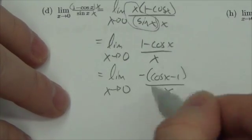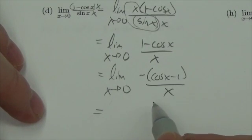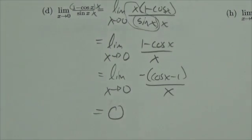We've seen this is that other identity we looked at. (cos x - 1) / x goes to 0 as x approaches 0. So the answer to this limit is 0.